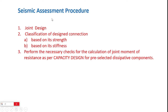As discussed in the earlier tutorials, the seismic assessment procedure essentially consists of designing a given joint, then classifying the design connection based on its strength as well as stiffness, and finally performing the necessary checks for the calculation of the joint moment of resistance as per the capacity design procedure for pre-selected dissipative components.